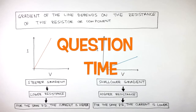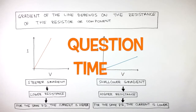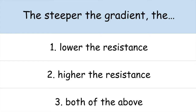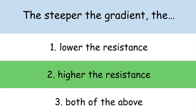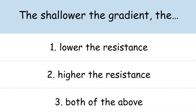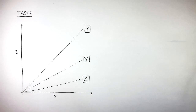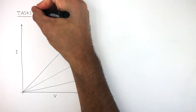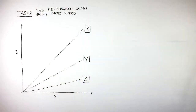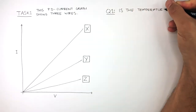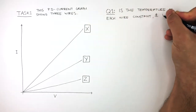It's question time. Attempt these questions to check your understanding. Here is a potential difference graph showing three wires: X, Y, and Z. Question one is: is the temperature of each wire constant, and how do you know?